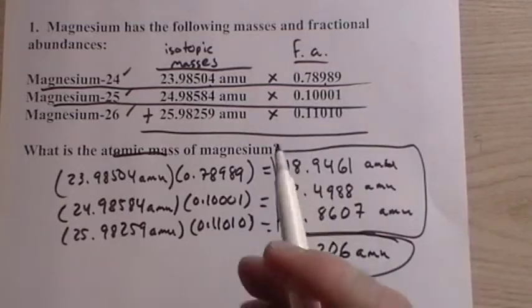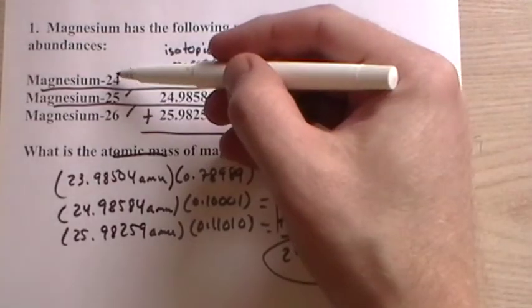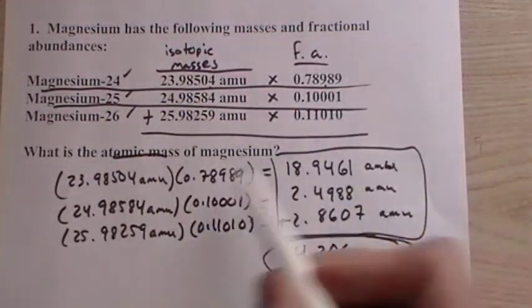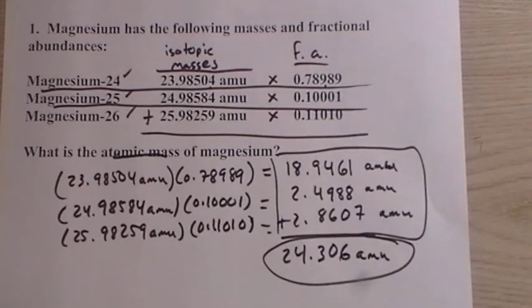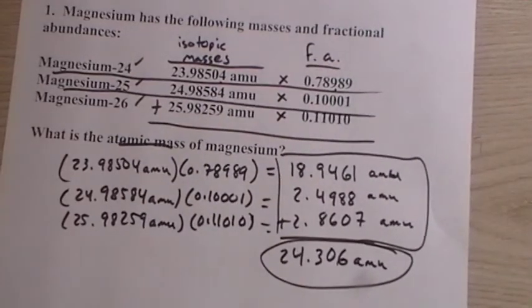So, it's very simple. If you're given 25 atomic masses, multiply them by their fractional abundances all the way down, and add them. That's all there is to it.